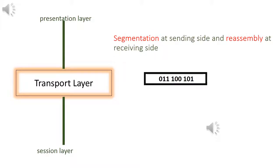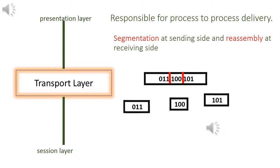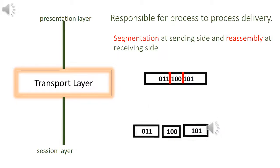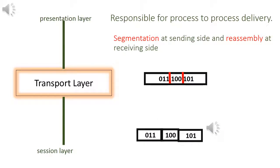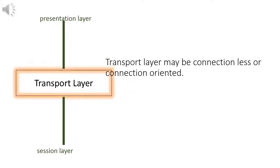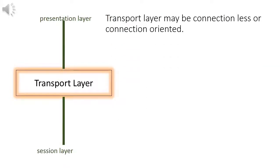Transport layer is responsible for process-to-process delivery. Its main function is segmentation at sender site. It breaks the data into segments, then reassembles at receiver site. At receiver site, all segments combine again. Transport layer may be connectionless or connection-oriented.